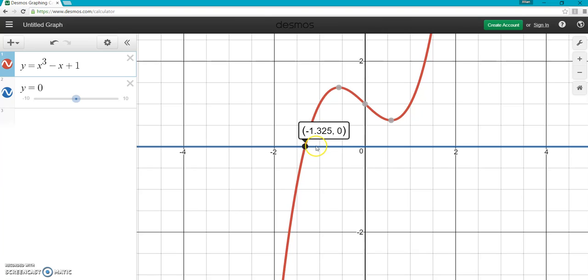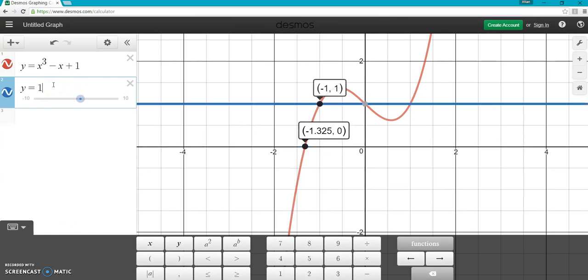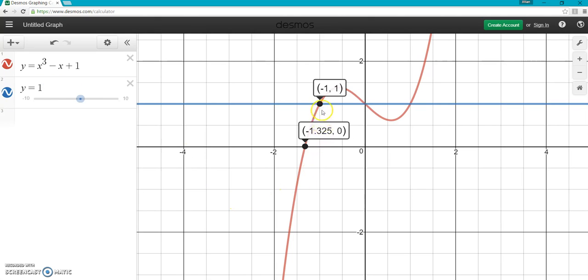In this case, there's only one solution. Let's say instead of 0, this was a 1. We want to find where this thing is equal to 1. Now there's, you can see, three different solutions.